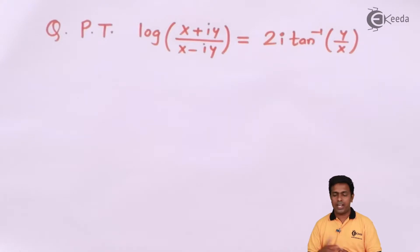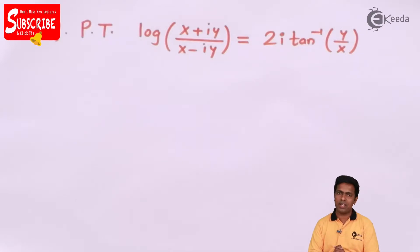Now here we have to prove that log of x plus iy upon x minus iy is equal to 2i tan inverse y by x.